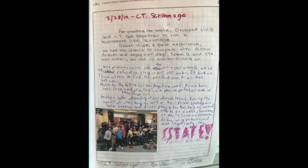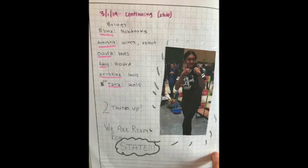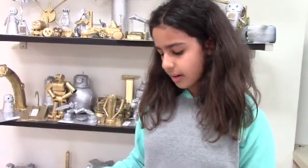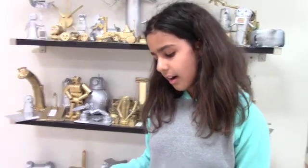As this team prepared for the state championship, they scrimmaged against another school and reflected on that scrimmage and the lessons learned. They also documented who was bringing what to state, their organization, who is responsible for what tools and wires — it's very important that everybody knows their role. Having a tournament reflection explains more about what you did and what you accomplished, so next time you know what to improve on. They wrote about their matches, their scores, and it helped them know what to do next time.